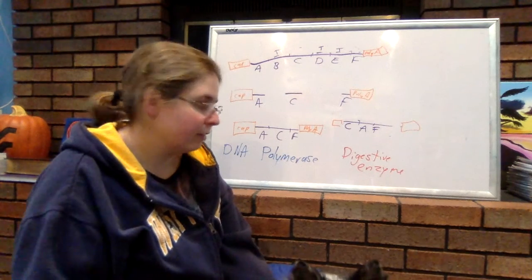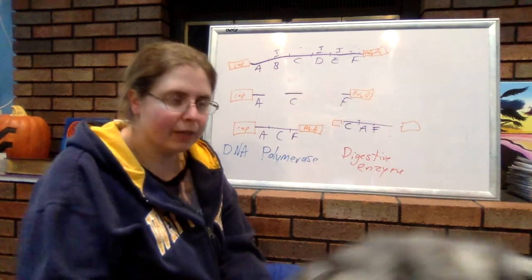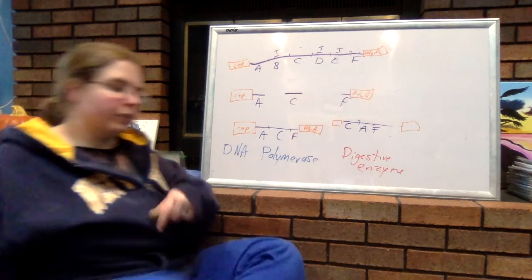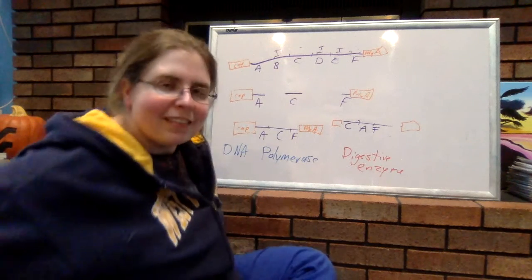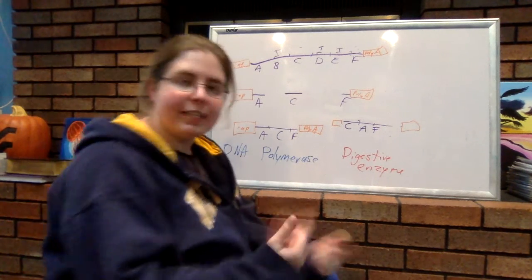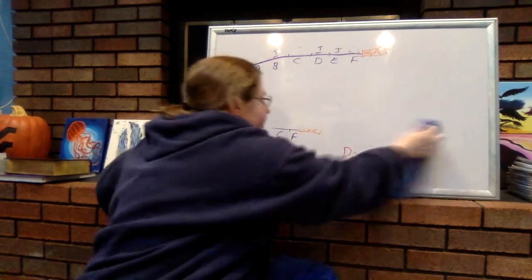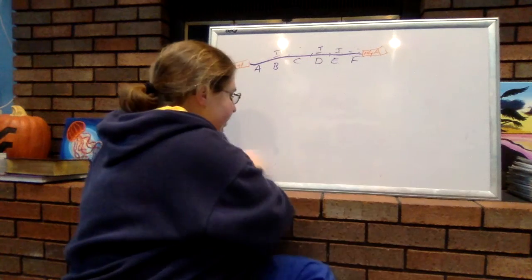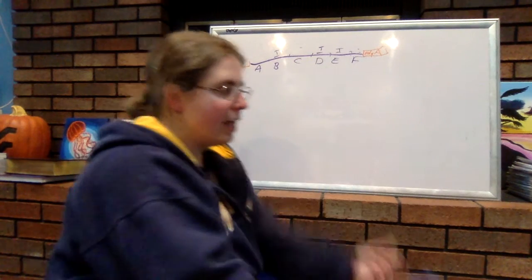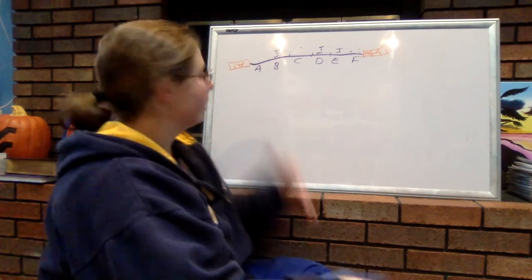So, that is called exon shuffling. Another thing we can do is called trans splicing, or trans-intron splicing. Now, what that looks at is maybe you have two different mRNA sequences that can actually come together.